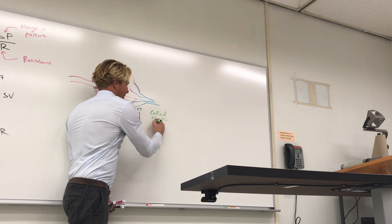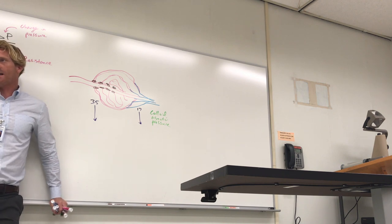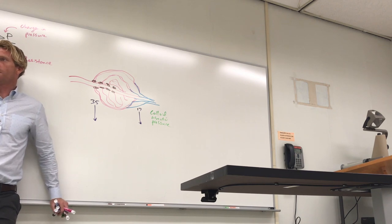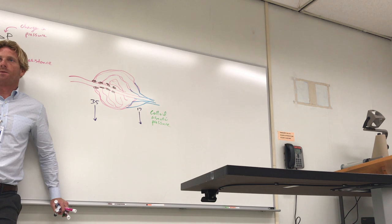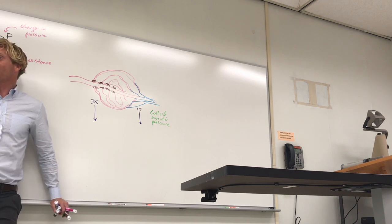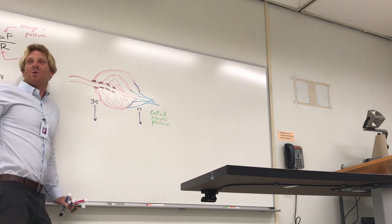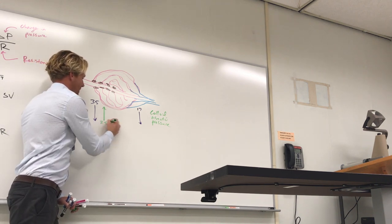There's another pressure at play called the colloid osmotic pressure. This comes from large proteins like albumin in the blood — they're constantly pulling fluid into the blood by osmosis, so it's an inward pressure. The magnitude of colloid osmotic pressure is always about 25 mmHg throughout the capillary bed — 25 here at the start and 25 at the end.